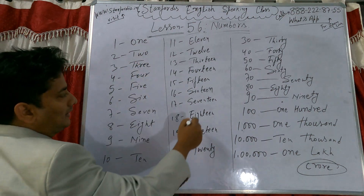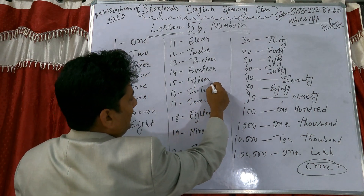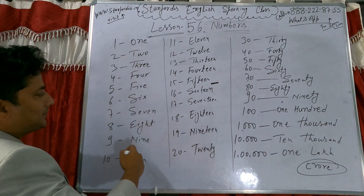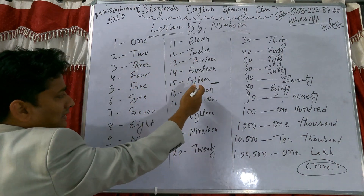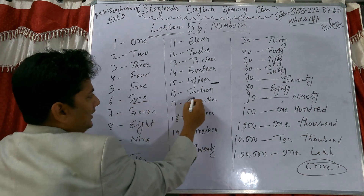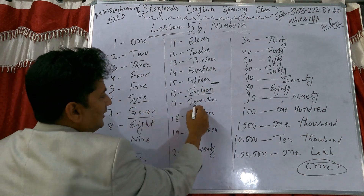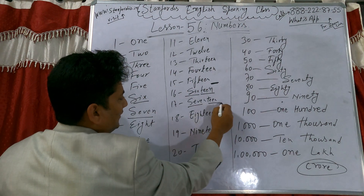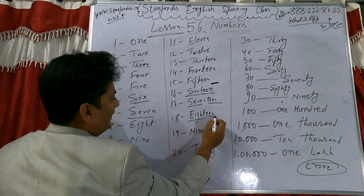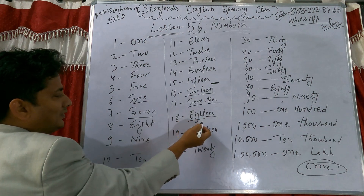You can see the spellings here — all these spellings are changing. For example, the spelling of six is S-I-X, but it becomes S-E-V-E-N for seven, and E-I-G-H-T for eight. Then eighteen — if you have to write it, the base is eight.